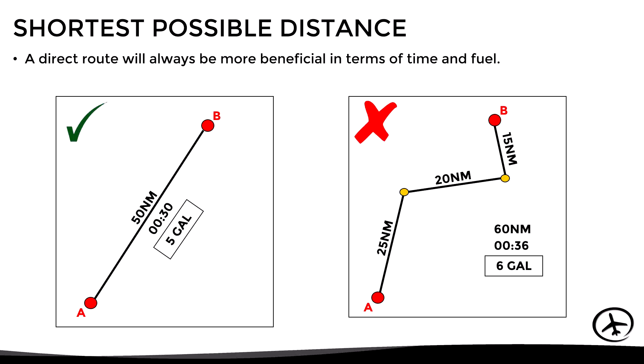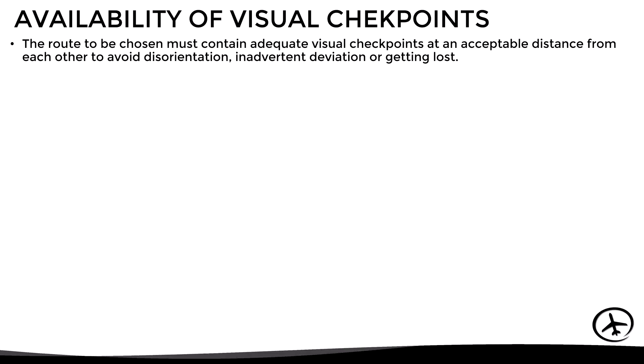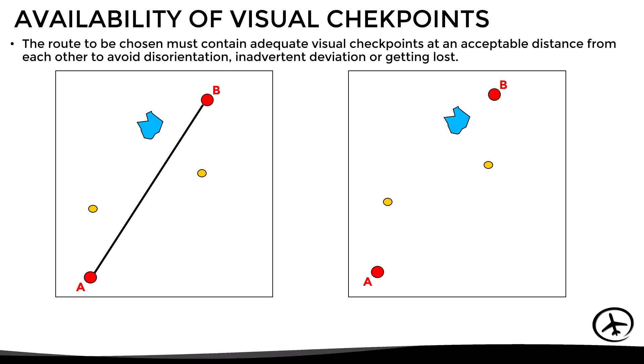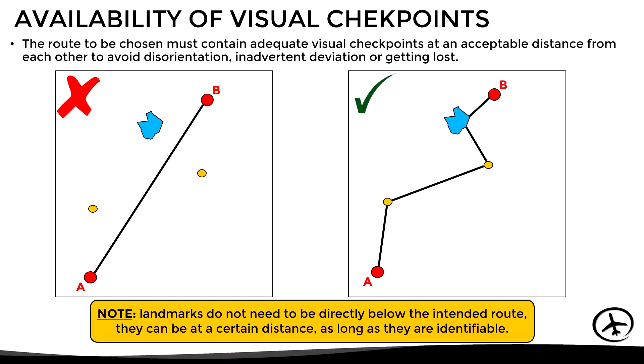When planning a VFR flight, we should always try to plan a direct route. However, this is not always possible. One of the reasons is the availability of visual checkpoints along the route. Since we are flying VFR, our main reference for navigation are landmarks and other visual references visible from the cockpit. The route must contain adequate visual checkpoints at an acceptable distance from each other to avoid disorientation, inadvertent deviation, or getting lost. If a direct route does not satisfy this requirement, we will have to divide it into several legs to ensure identification of available checkpoints. Note that checkpoints do not need to be directly below the intended route — they can be at a certain distance, as long as they are identifiable.